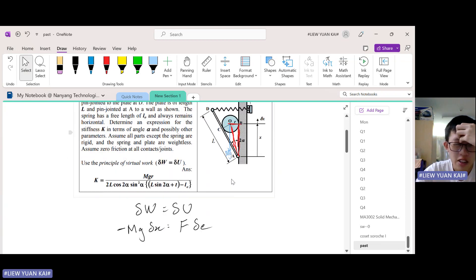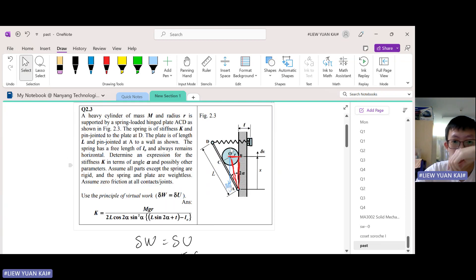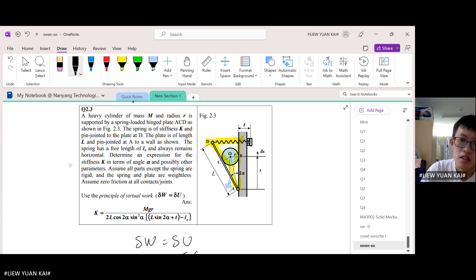Next, we want to relate alpha to the extension. Now, how do we do that? So we can focus on this triangle, I suppose, this right angle triangle. When you do that, you get this opposite and this.